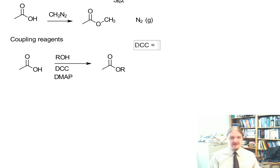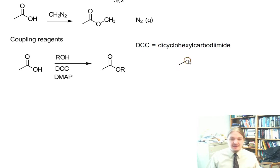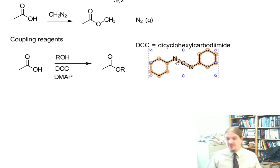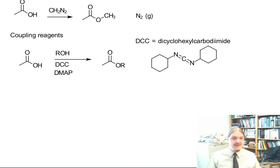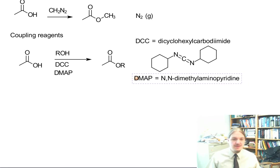DCC is dicyclohexylcarbodiimide. The structure of that is nitrogen double bond carbon double bond nitrogen with cyclohexyl groups on it. And DMAP equals N,N-dimethylaminopyridine, which has a pyridine ring with a dimethylamino group.